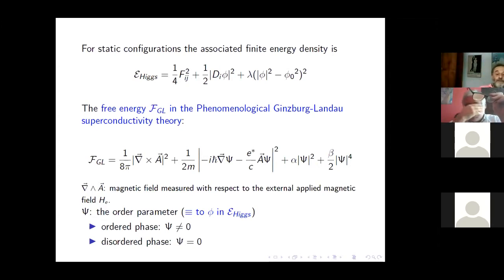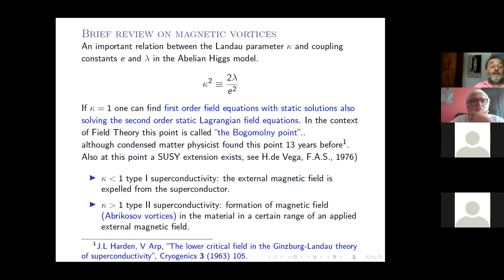And now to compare, the free energy in the phenomenological Ginzburg-Landau superconductivity theory is the one in the second formula. The first term is the magnetic field squared that is coinciding with the first term, well defined with respect to the external magnetic field that one applies on superconductors, then the covariant derivative term and the scalar psi, which is an order parameter in the Ginzburg-Landau superconductivity theory.